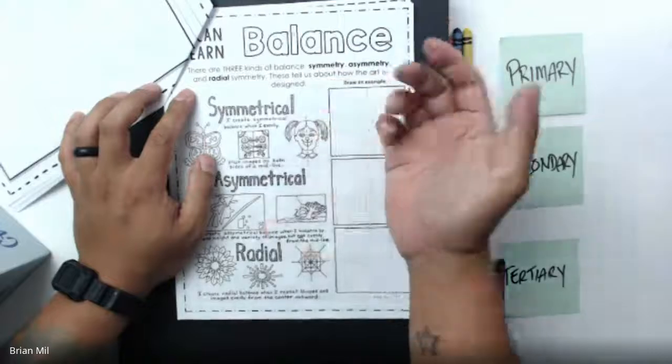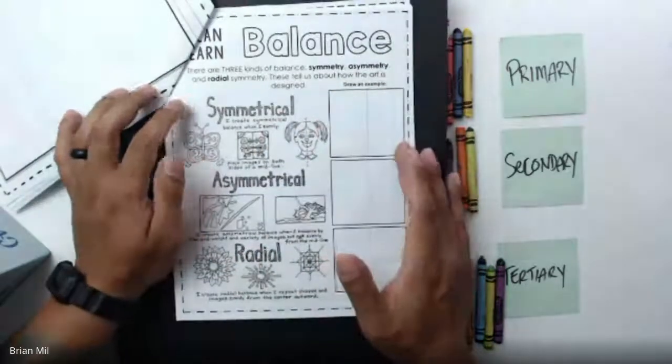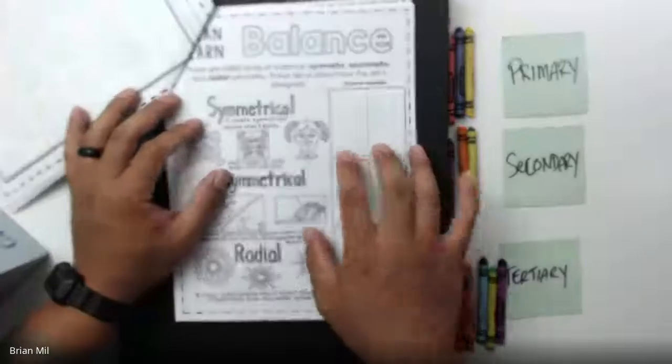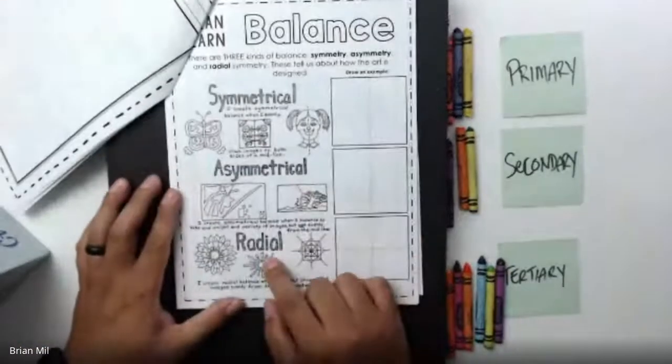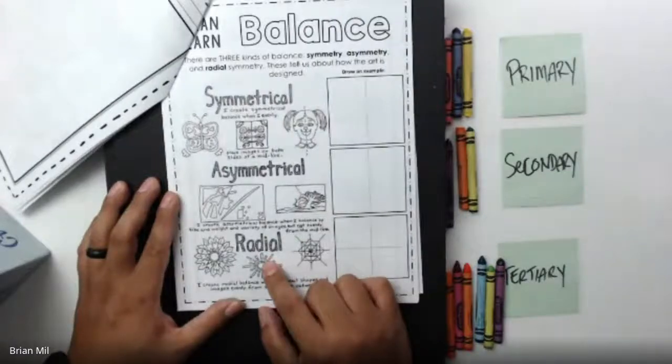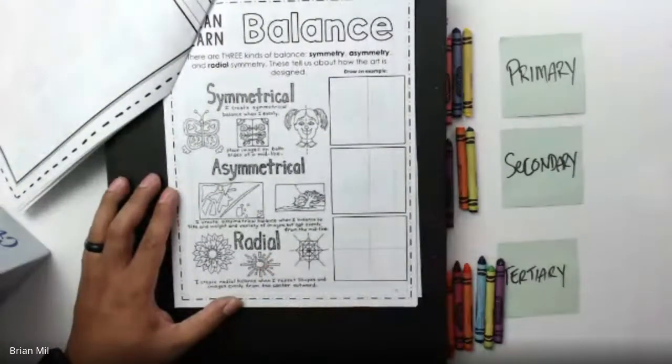Balance is basically when you balance an image or when you have an image that's balanced in a certain way. So we have three examples here: there is symmetrical, there's asymmetrical, and there's also radial types of balance right here.